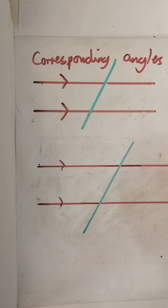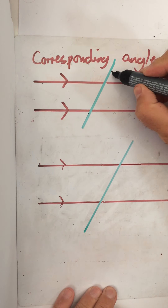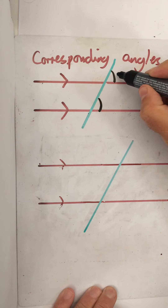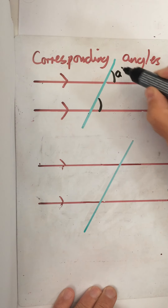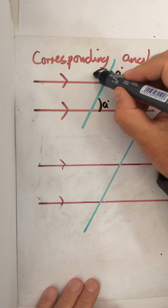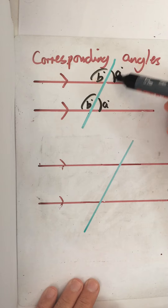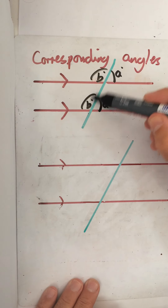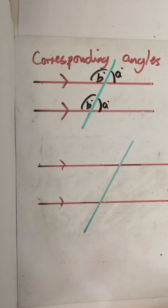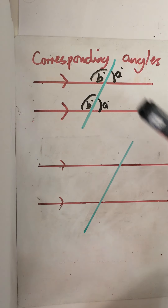Corresponding angles. So this angle here will correspond to this angle here. If this angle is A degrees, then that is also A degrees. And then on the other side, this angle here will be B degrees and this angle is the same — corresponding angles are equal. I don't want to make notes on this because as part of the work today I've sent you some notes, and I want you to stick those notes into your book as well.